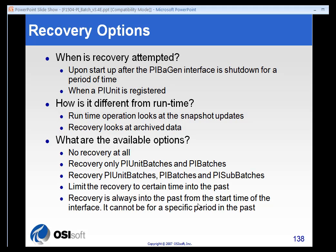We attempt to recover the data every time the PIBatchGen interface is shut down and restarted, or when you register a PI unit — we will go back and try to recover the data from your process data. How is it different from runtime? The big difference is that at runtime the interface looks at snapshot values, and if you're in a data recovery mode, we look at archive data — data that's stored in the archive. The big difference between snapshot and archive data is the compression process. You want to make sure that on your trigger tags especially, you have compression set where you're not filtering out meaningful trigger values, so it's important to check your compression settings on all of your active points or trigger tags.